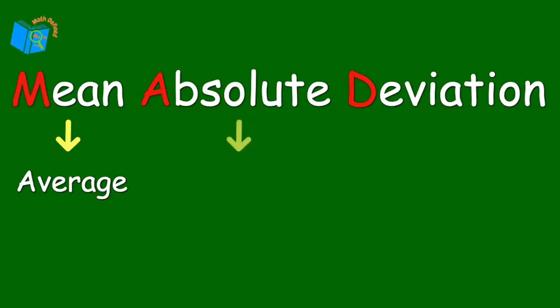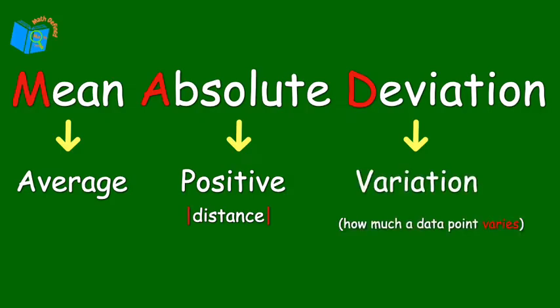The word absolute here is referring to the math term absolute value, or a value's distance on a number line. And remember, it is always positive because distance is always positive. The last word here, deviation, is another fancy math term describing how much a data point varies or differs.